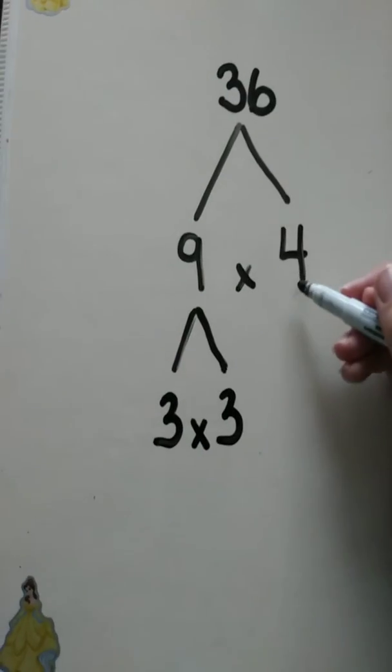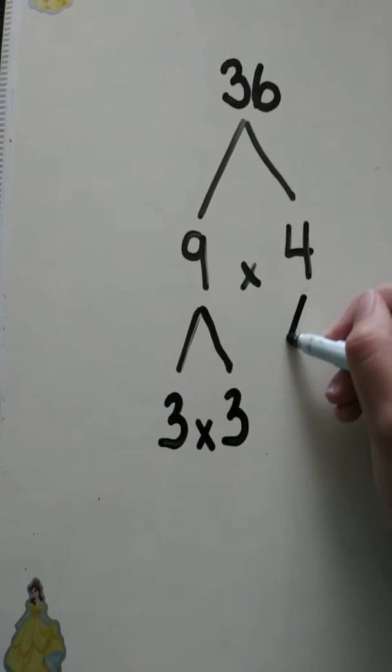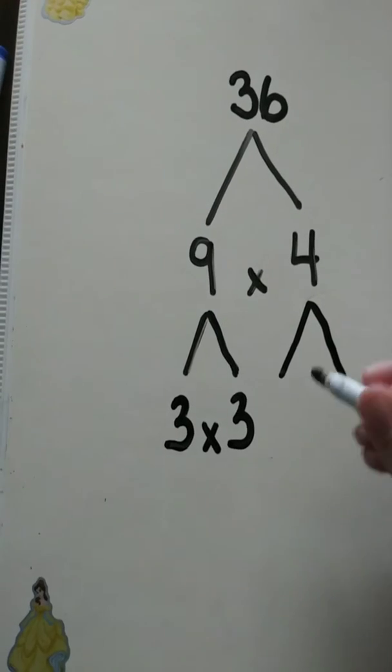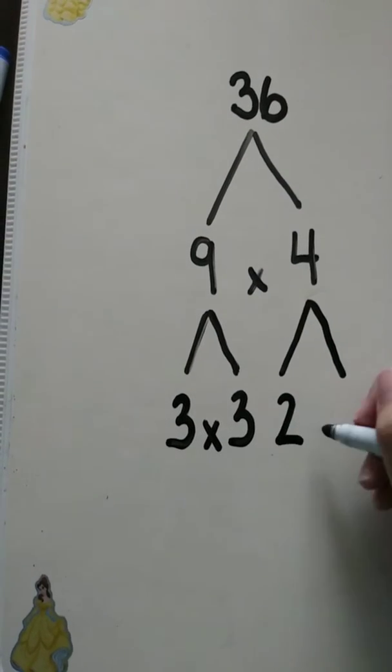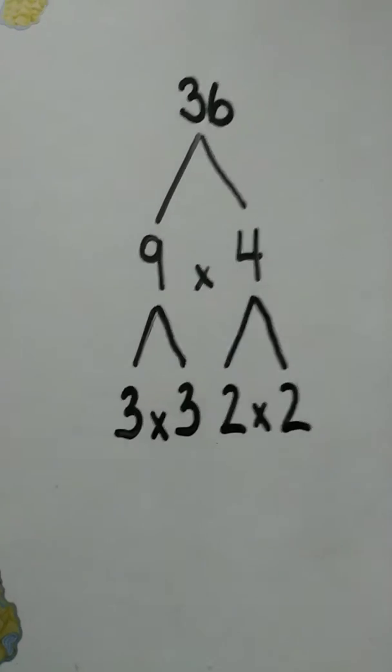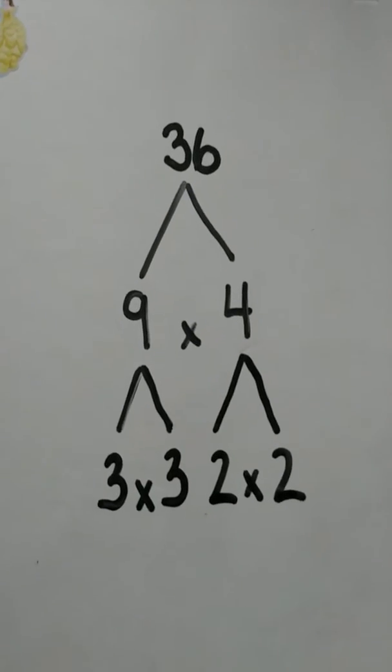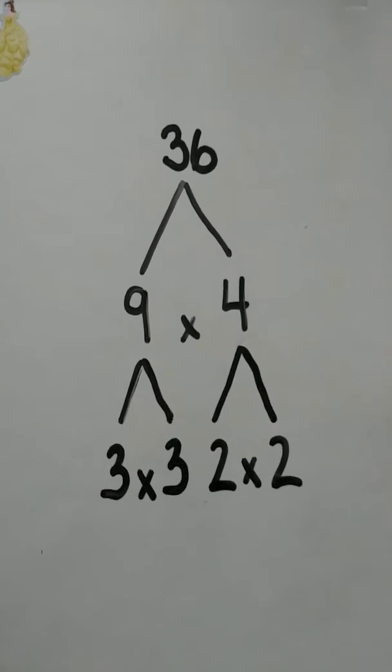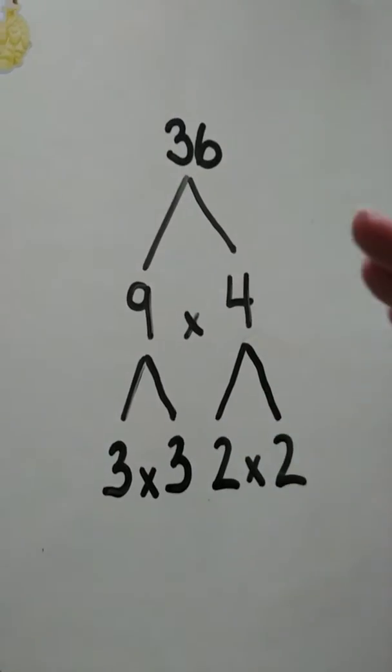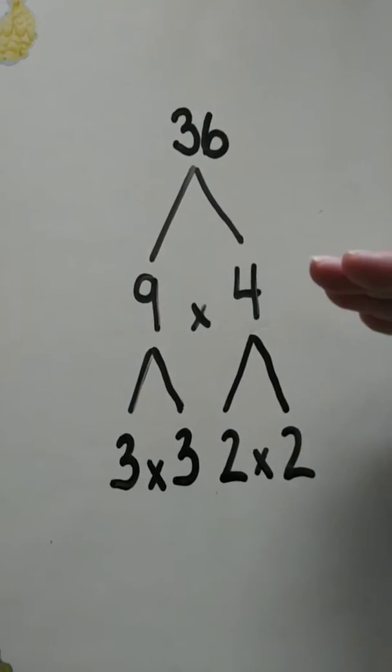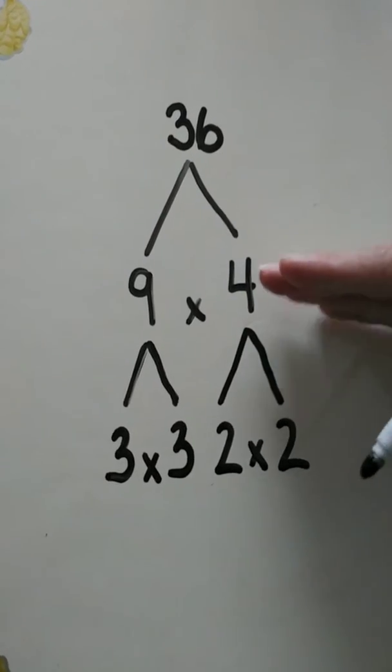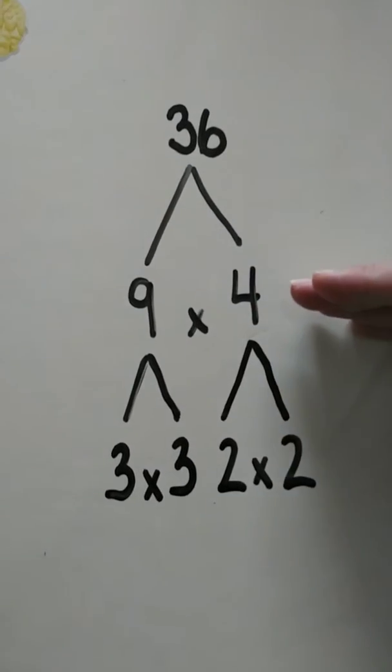All right, and then what factors make up 4? A 2 times 2. So a couple of really important things to keep in mind here. Every time you're decomposing a number and bringing it down to the next level, please make sure that the numbers stay on the same line. See how the 9 times 4 is all on the same line here?